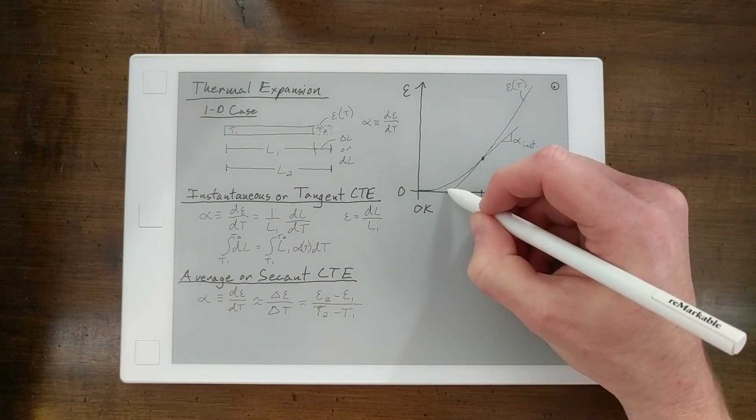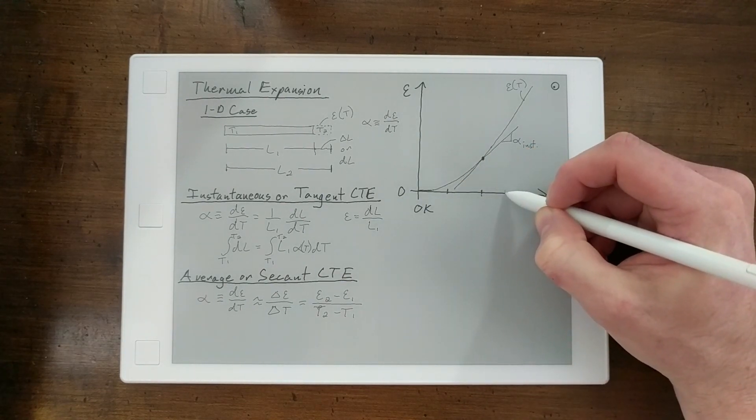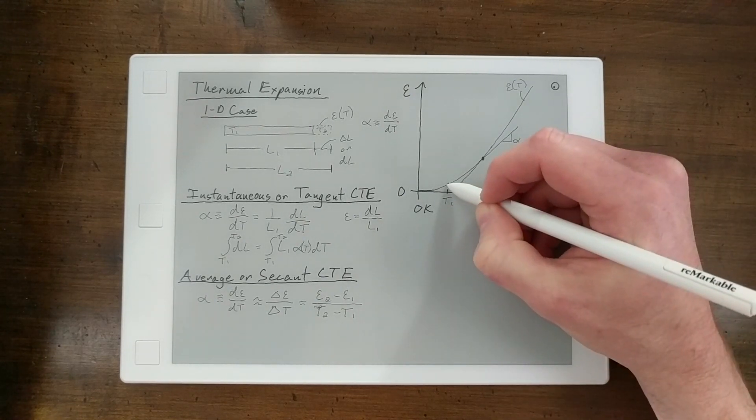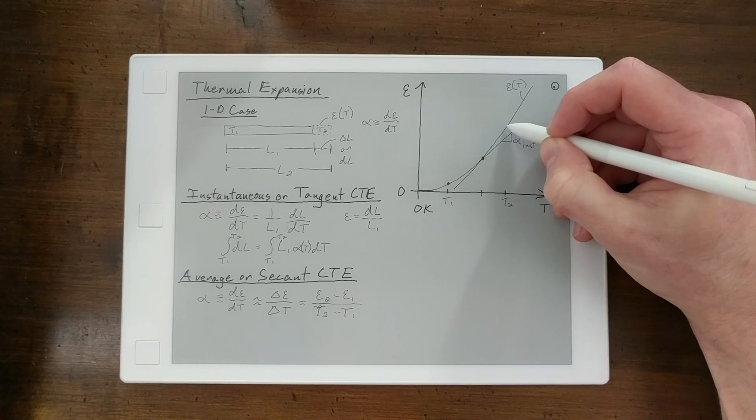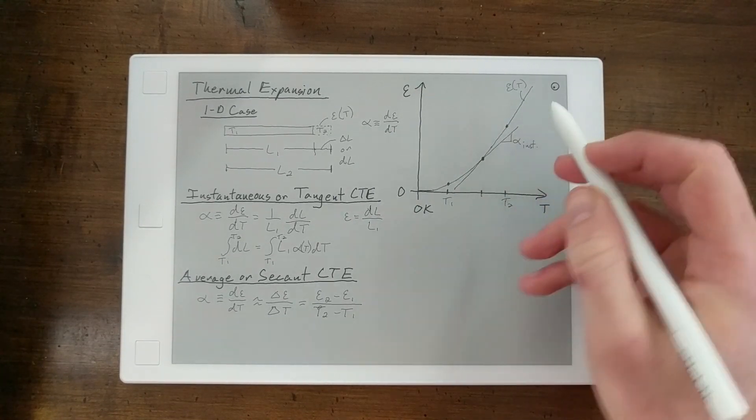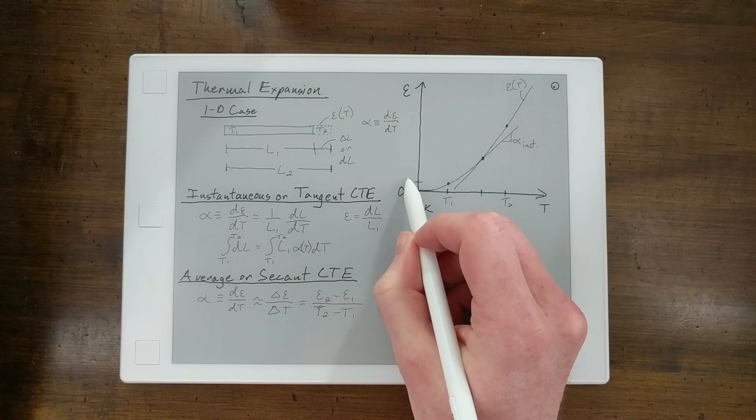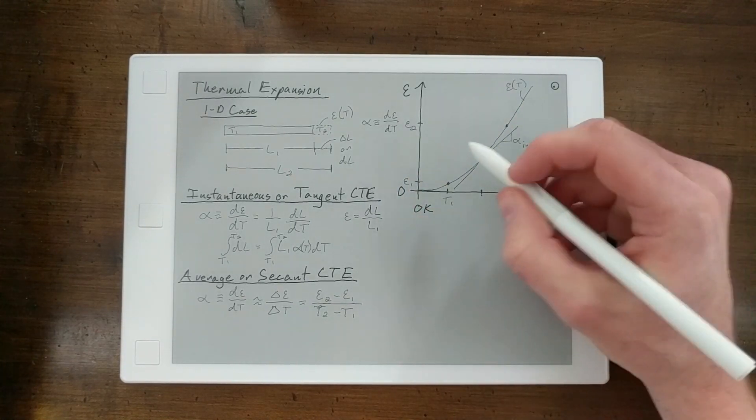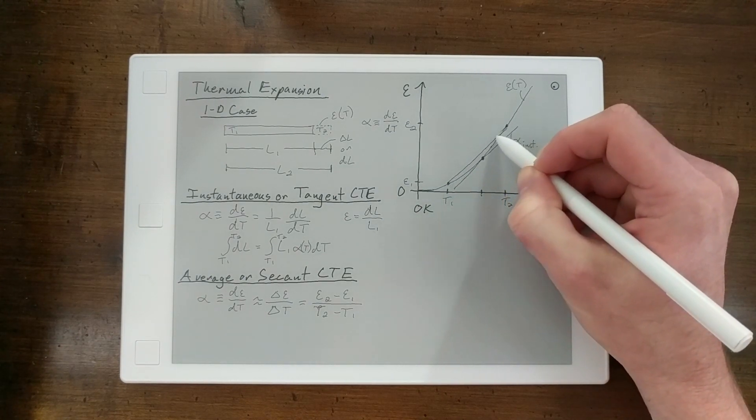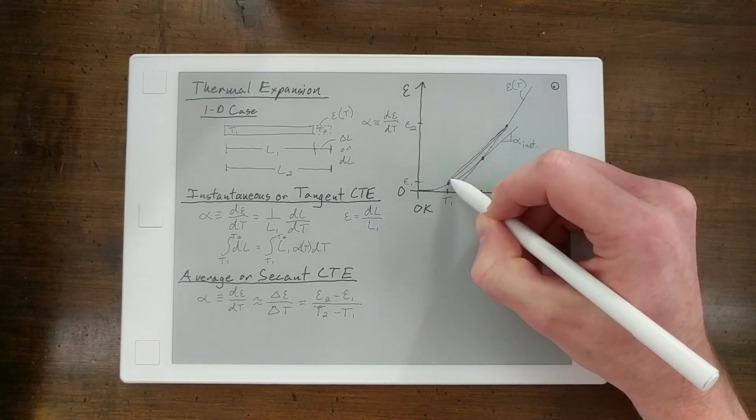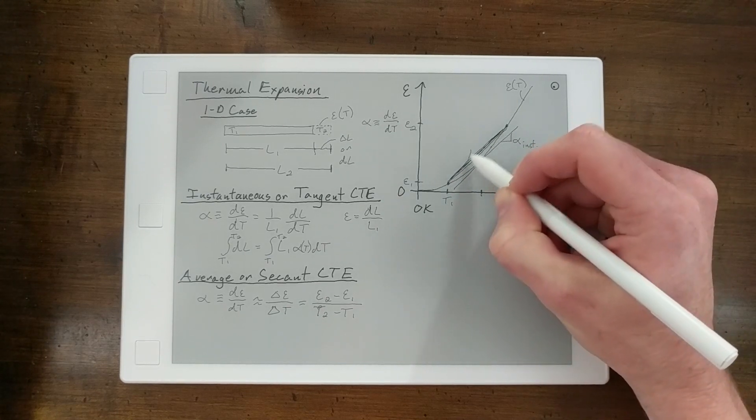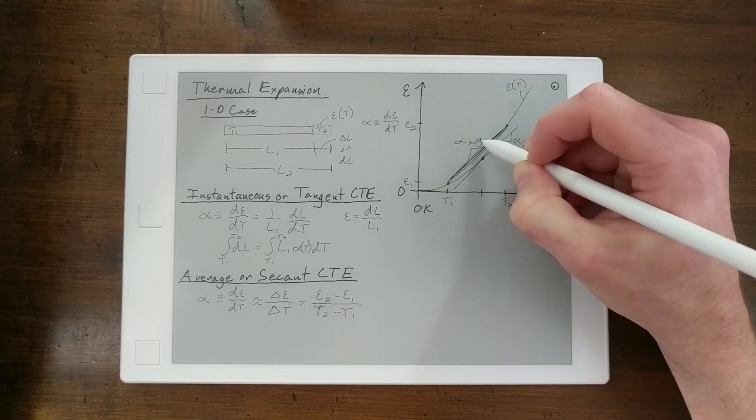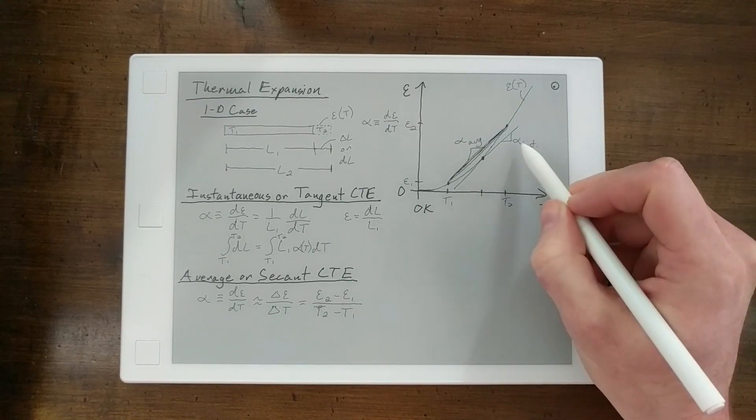So if you have a particular temperature range, for example, let's say this is T1 and this is T2, you would look at the strain at those two temperatures. This would be strain 1, this would be strain 2. And it's effectively drawing a straight line between those two temperatures and saying that that line, or the slope of that line, is your average CTE between those two temperatures.